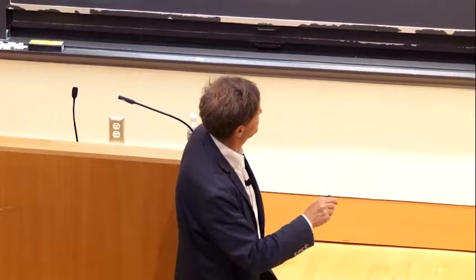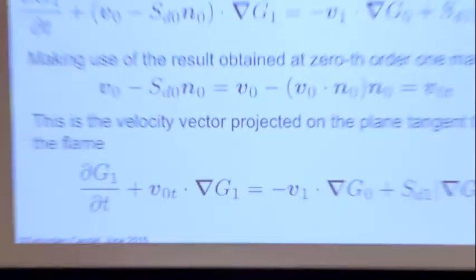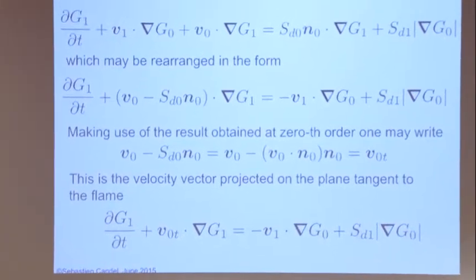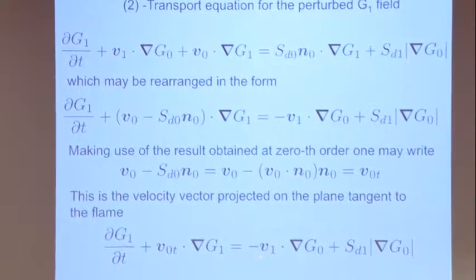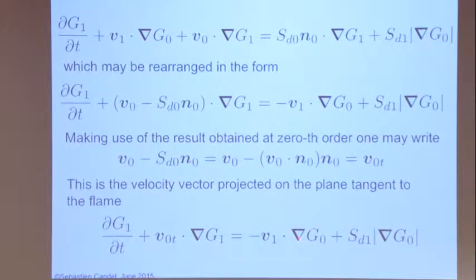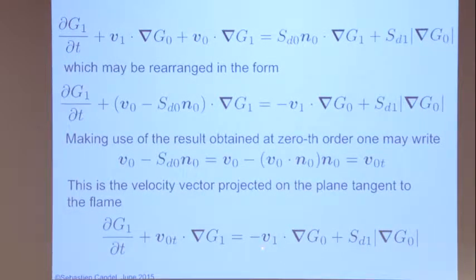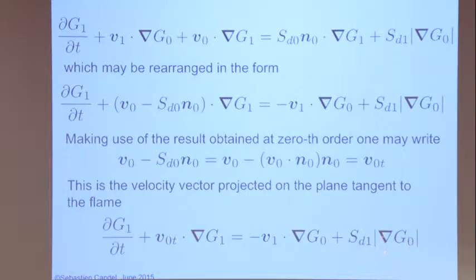The G-equation tells us what happens to the perturbations in the contour of the flame. The sources of these perturbations are basically the velocity fluctuations which come into the flame, the displacement fluctuations, which act on the flame.